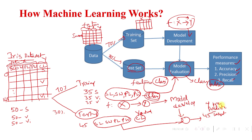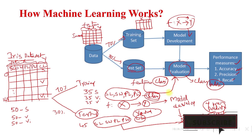To find the performance of the model, we compare the actual values with the corresponding predicted values. This is done using performance measures like accuracy, precision, and recall. This is how machine learning works.